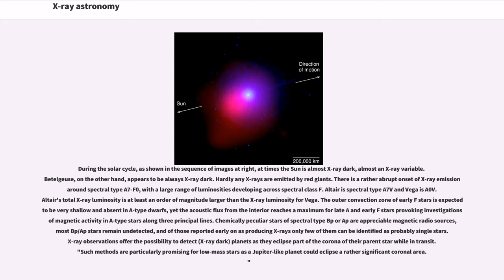There is a rather abrupt onset of X-ray emission around spectral type A7-F0. Altair is spectral type A7V and Vega is A0V. Altair's total X-ray luminosity is at least an order of magnitude larger than the X-ray luminosity for Vega. X-ray observations offer the possibility to detect planets as they eclipse part of the corona of their parent star while in transit. Such methods are particularly promising for low-mass stars.